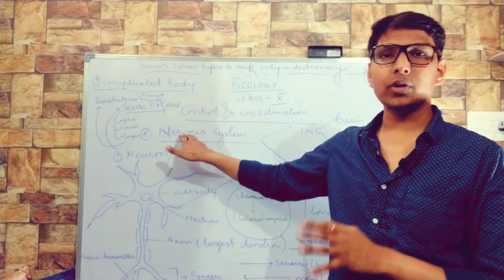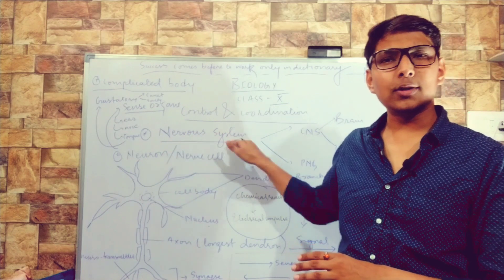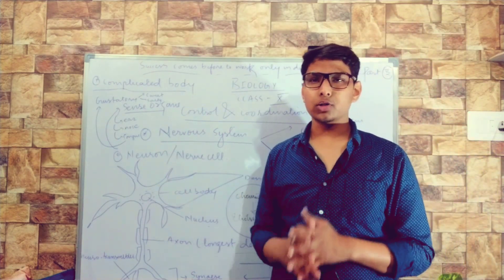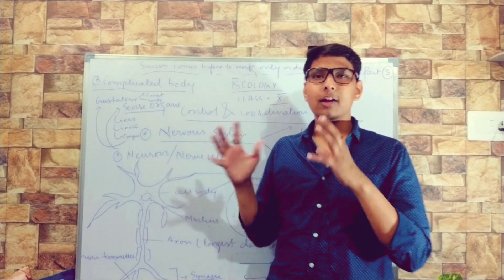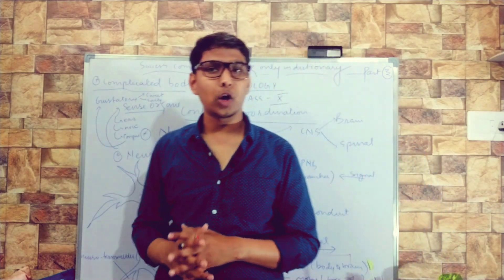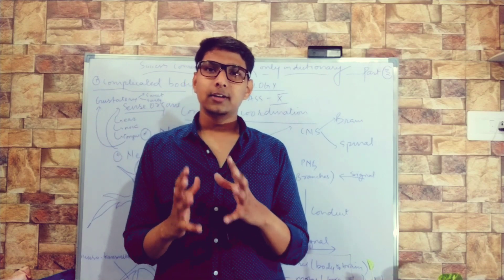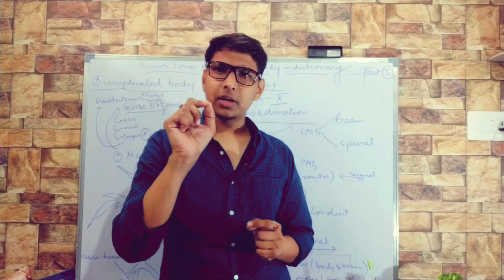So let's start the nervous system with the unit of nervous system. What is the unit of nervous system? The unit of nervous system is neuron. What is neuron? It is a specialized cell which can sense the changes in the environment. As I have told you, if you have any sudden changes, you respond. Just suppose somebody comes and pins you, you respond accordingly.